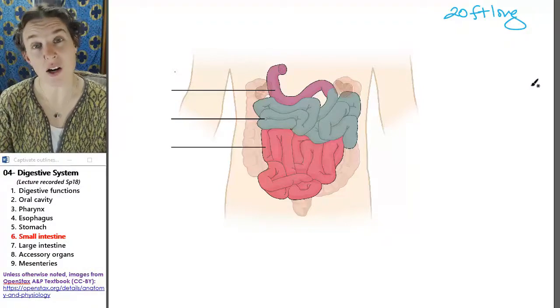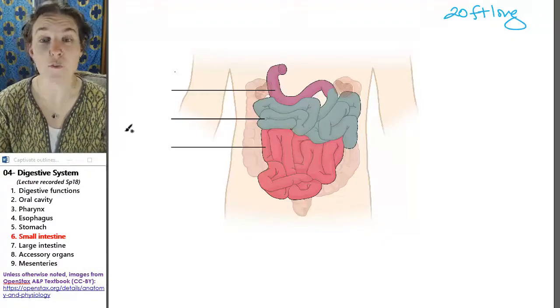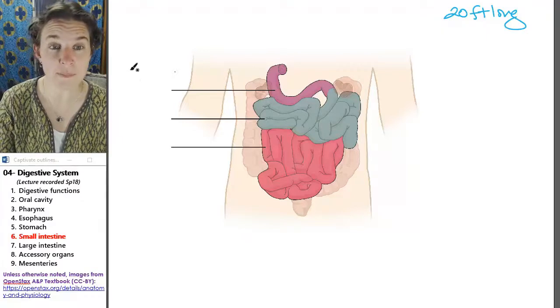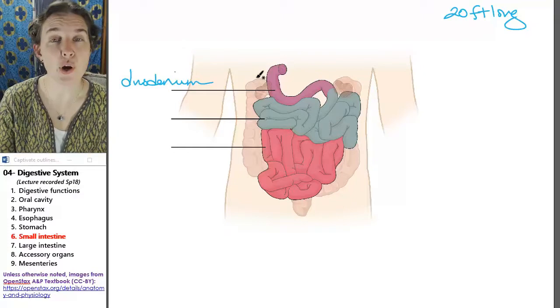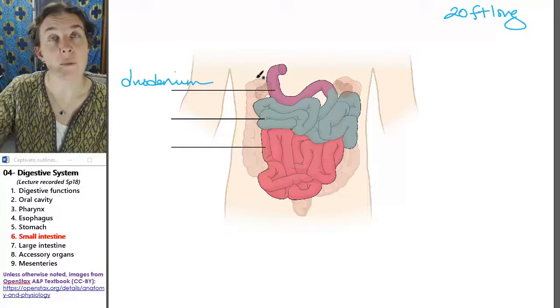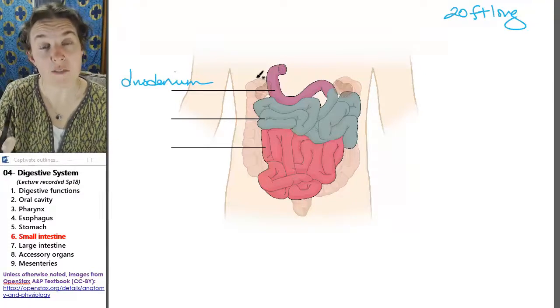So there are three parts of the small intestine. The first part is the duodenum. So the pyloric region of the stomach